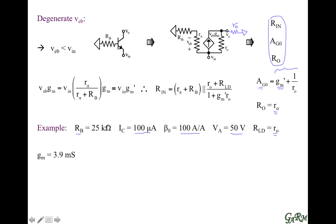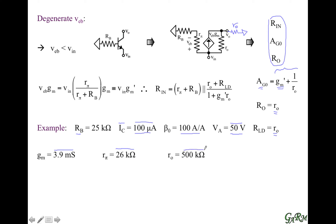The first thing we compute is gm. gm is the bias current divided by the thermal voltage, giving us 3.9 millisiemens. rπ is β times (1/gm), and since 1/gm is 260 ohms, rπ equals 26 kilohms. The output resistance ro is the Early voltage (50 V) divided by the bias current (100 µA), giving us 500 kilohms.